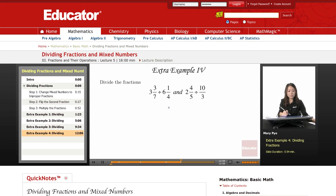A couple of examples. I have 3 and 3 over 7 divided by 6 and 1 over 4. These are both mixed numbers, so I have to convert them to improper fractions.